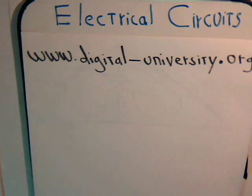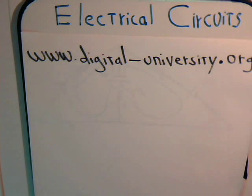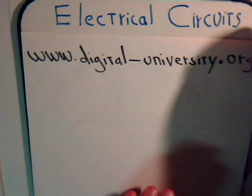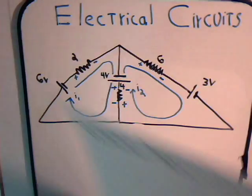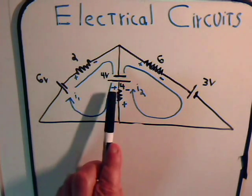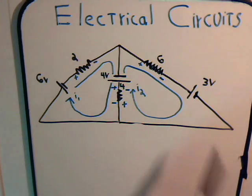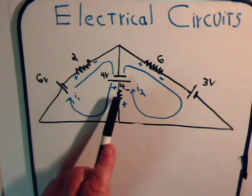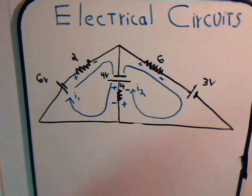This is video number 13 from digital-university.org. In this video we're going to present our second example of mesh current analysis. The circuit we want to look at has a 6 volt, 4 volt, and a 3 volt constant voltage source, along with three resistors in the network.